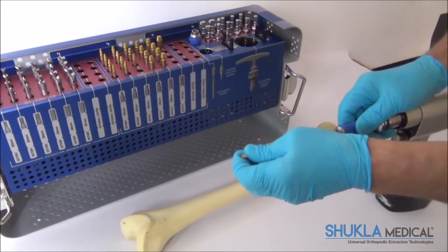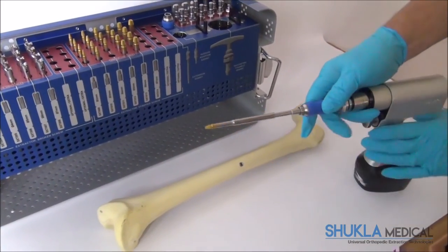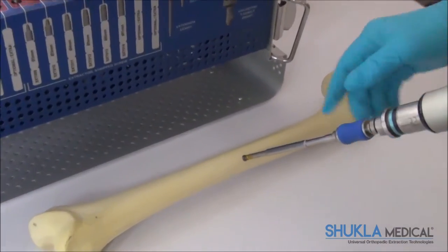Then the extractor is turned in a counterclockwise direction over the broken screw, until the threads inside the extractor engage.